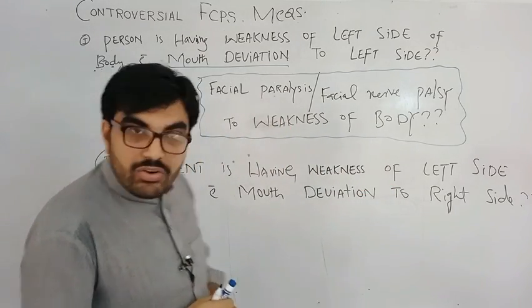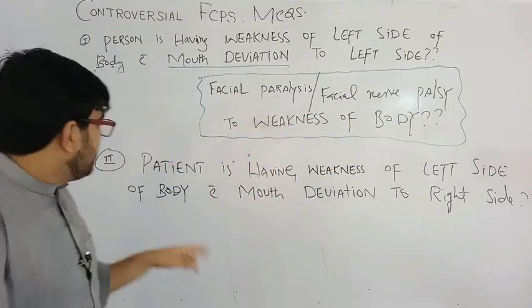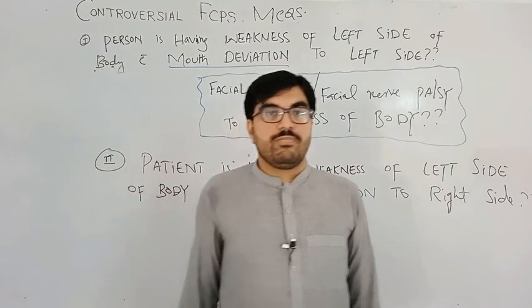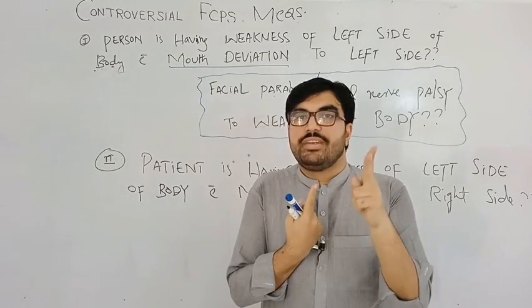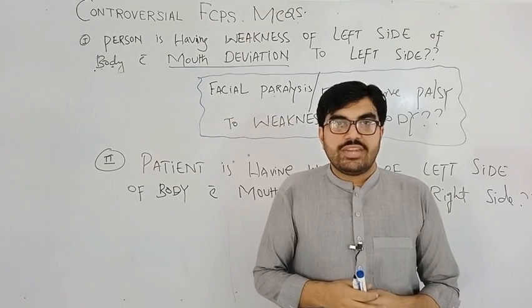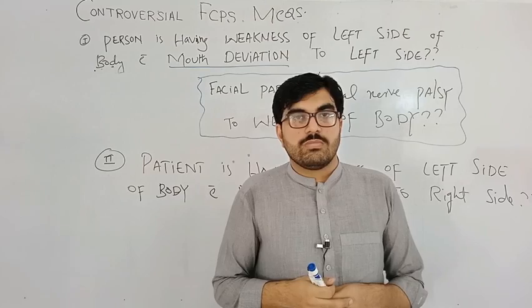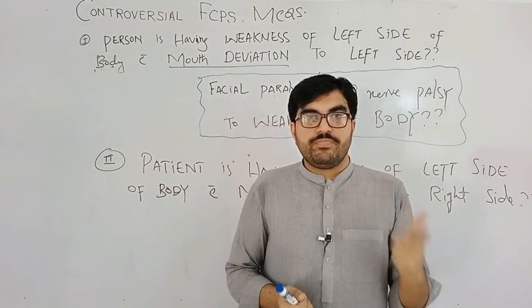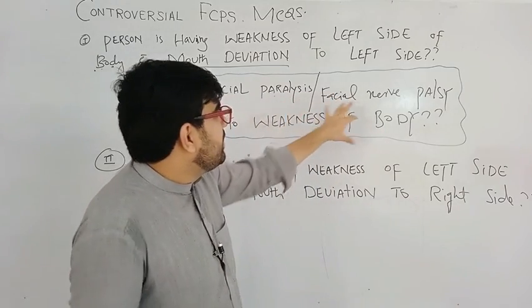Contralateral representation of facial nerve paralysis and body weakness means pontine stroke. Conversely, if the mouth is deviated to the right and there is left body weakness, the left facial nerve is paralyzed — ipsilateral to the body weakness — so the lesion is in the internal capsule. The answer could also be MCA stroke, cortex, or corticospinal tract depending on the options given.